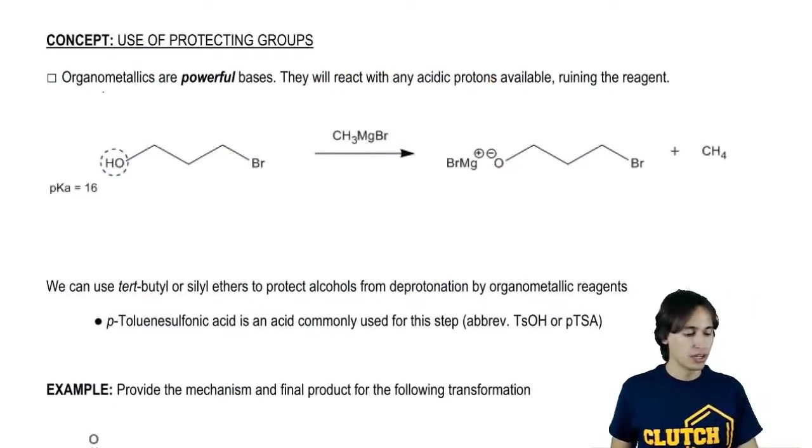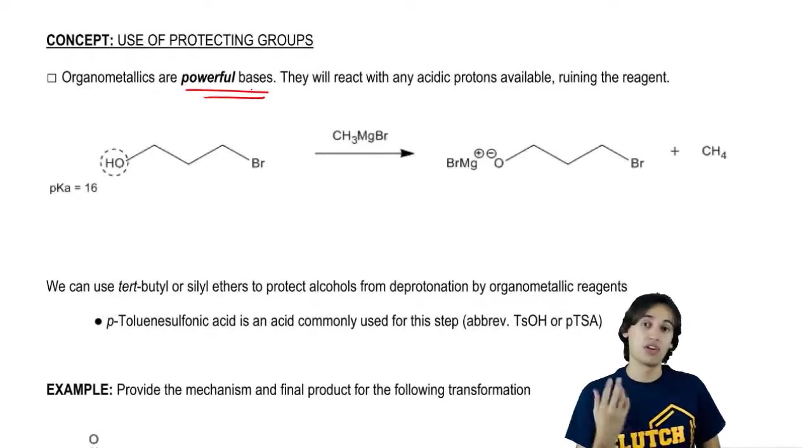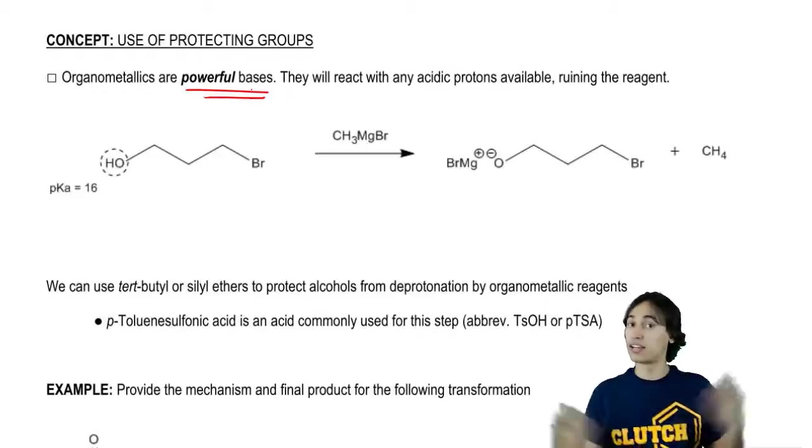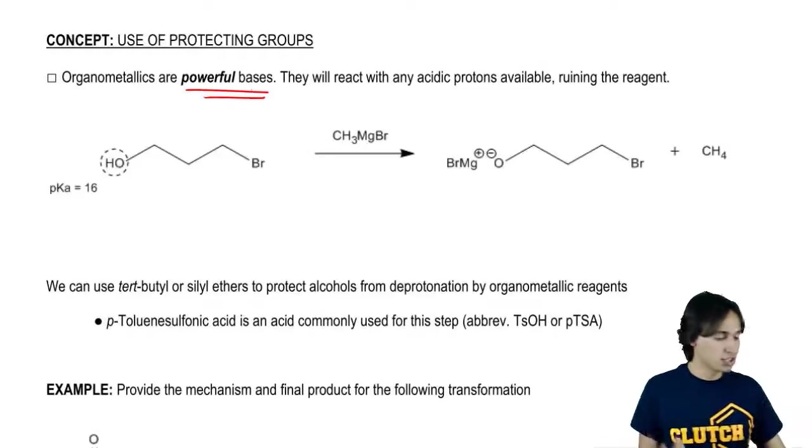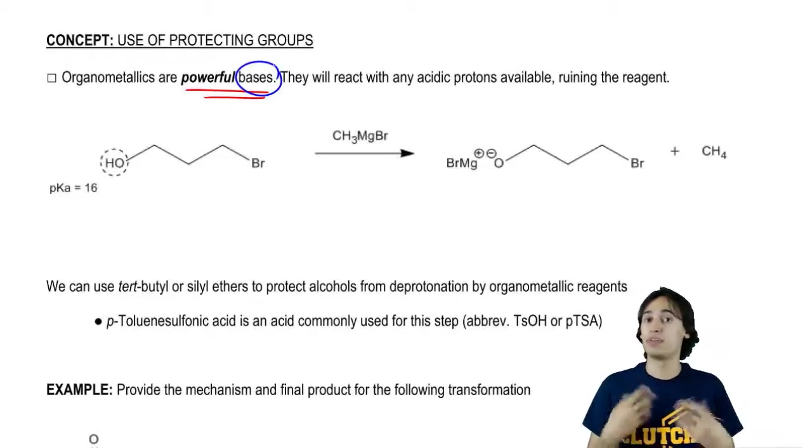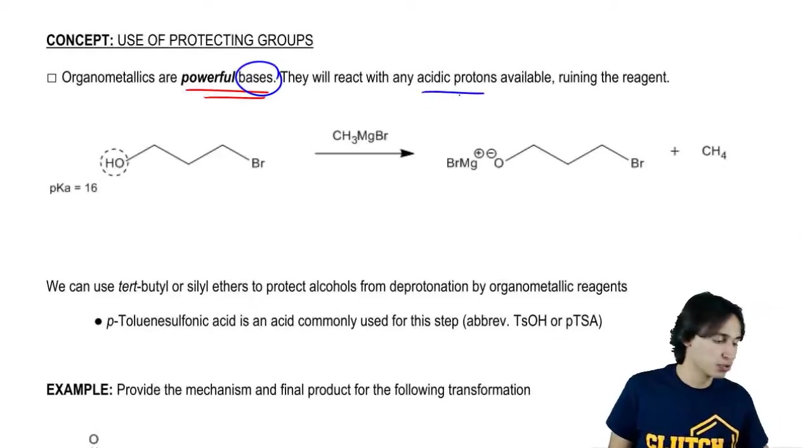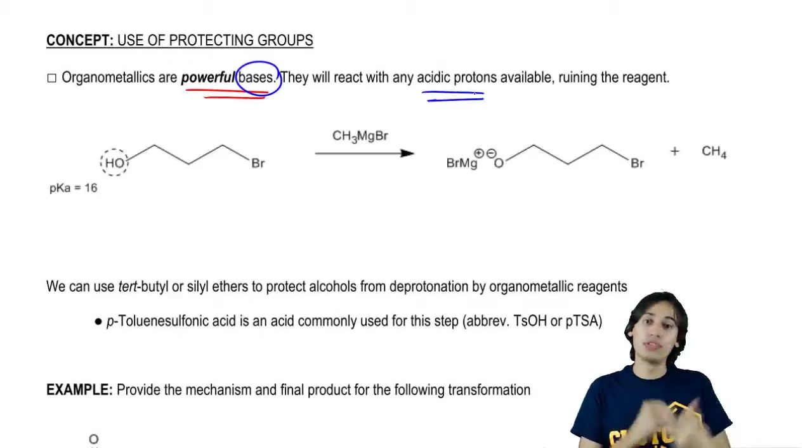As I've explained before, organometallics are very powerful bases. They can react as nucleophiles and attack electrophiles, but they can also react as bases and deprotonate things. What kind of things can they deprotonate? They tend to react with any acidic protons available, and that ruins the reagent.